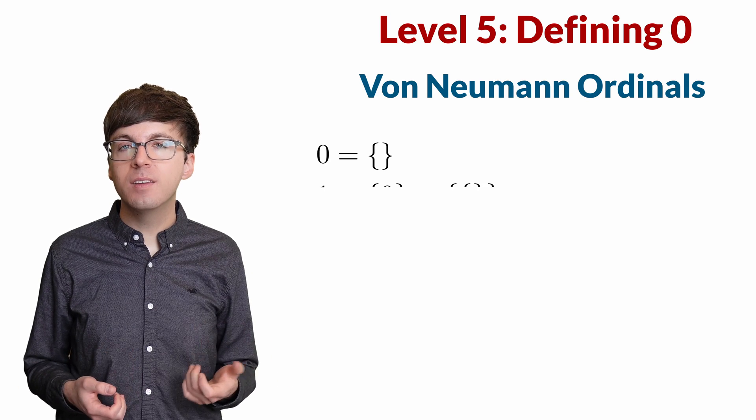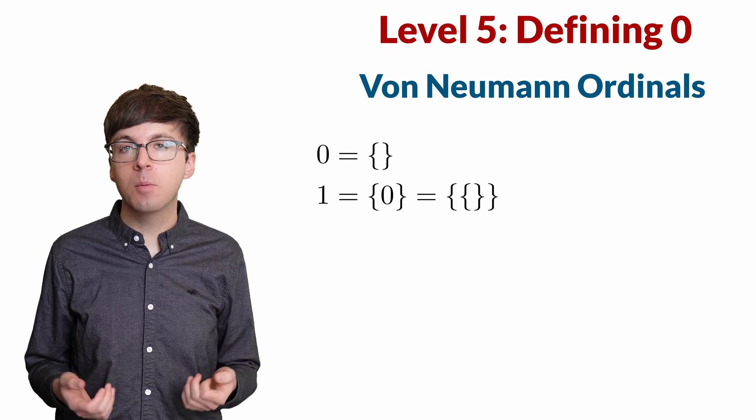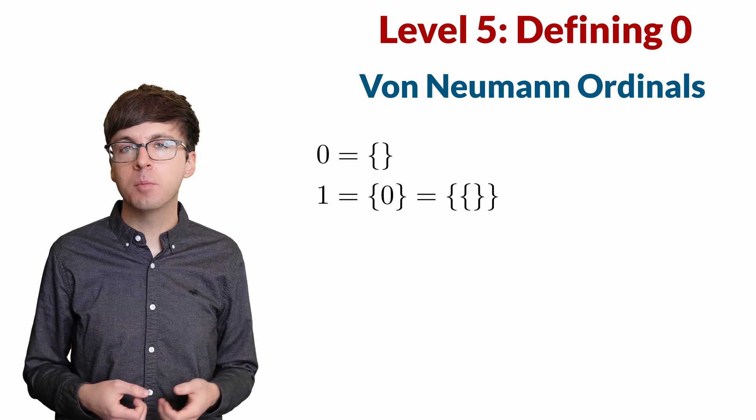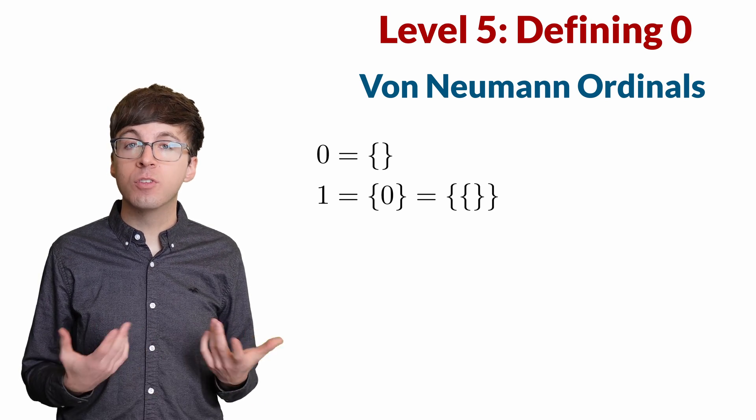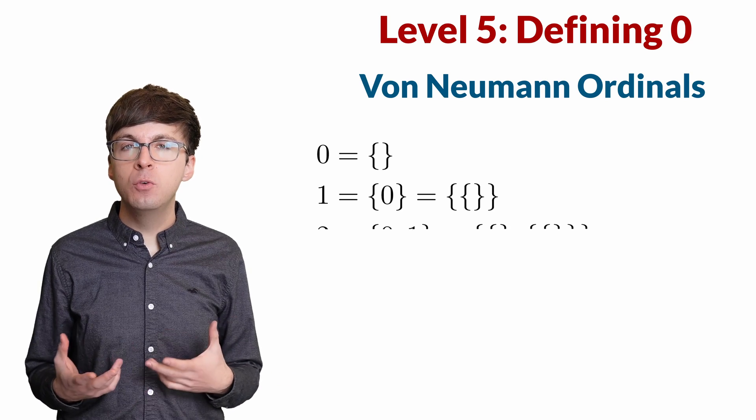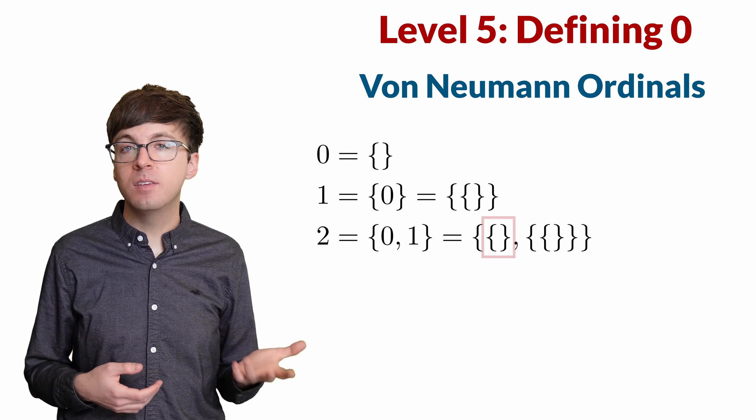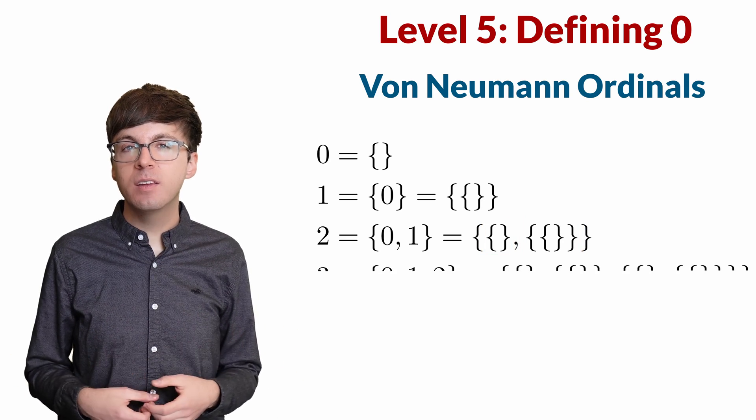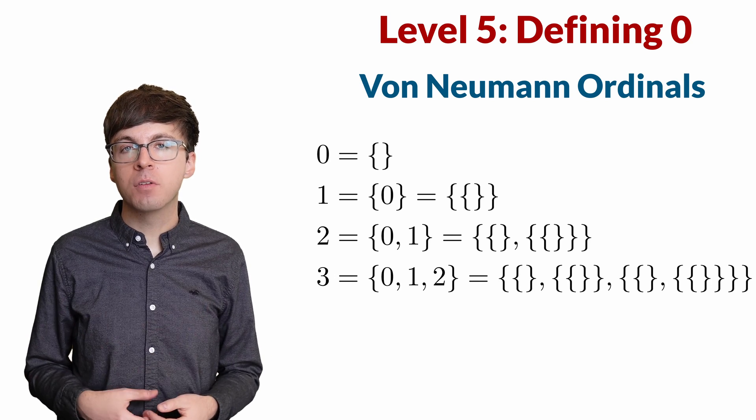Then one is the set that contains zero. This is the set that contains the empty set. This is like putting our empty box inside another empty box. Now the outer box contains one element, which is an empty box. Then two is the set that contains zero and one. So it's the set that contains the empty set, and the set containing the empty set. Three is the set that contains zero, one, and two, and so on for all the natural numbers.